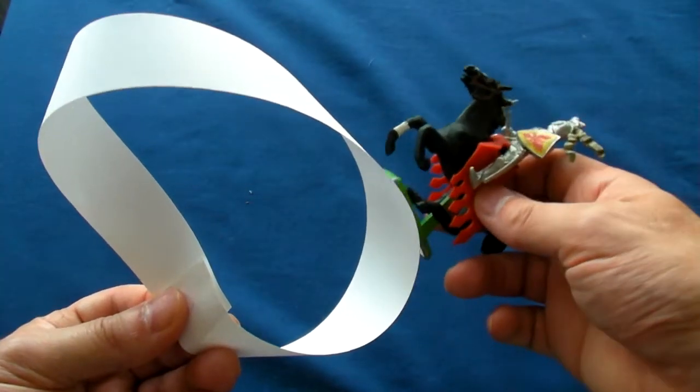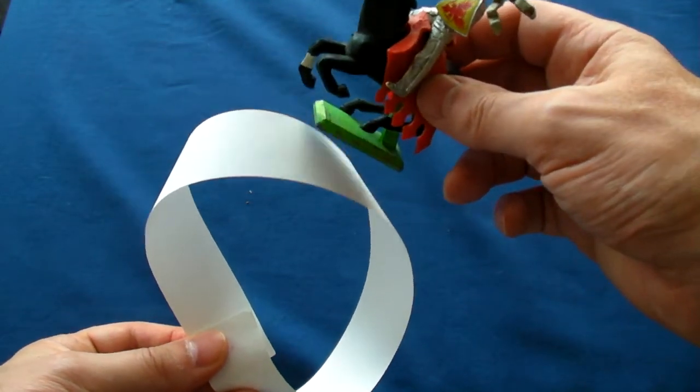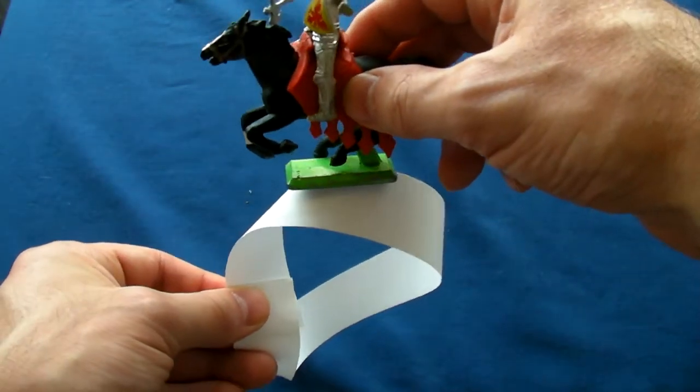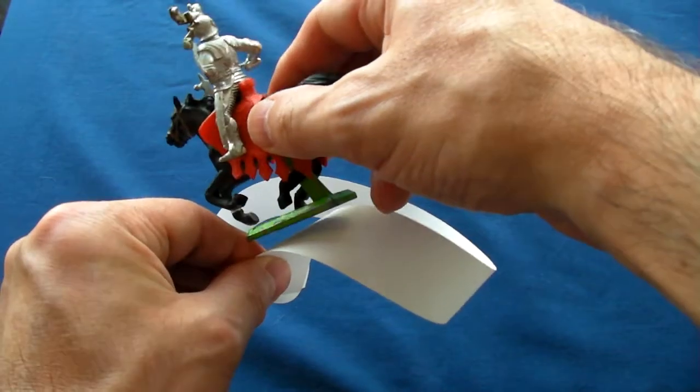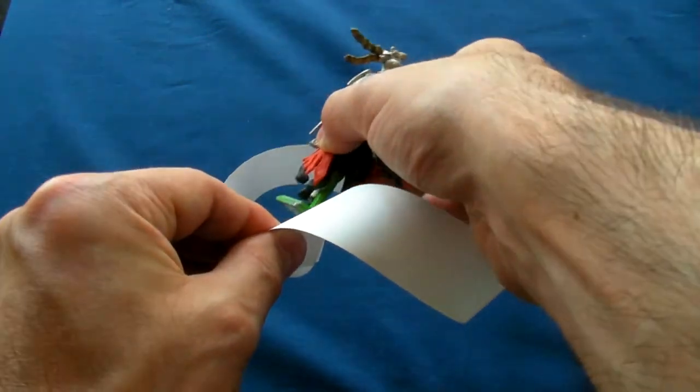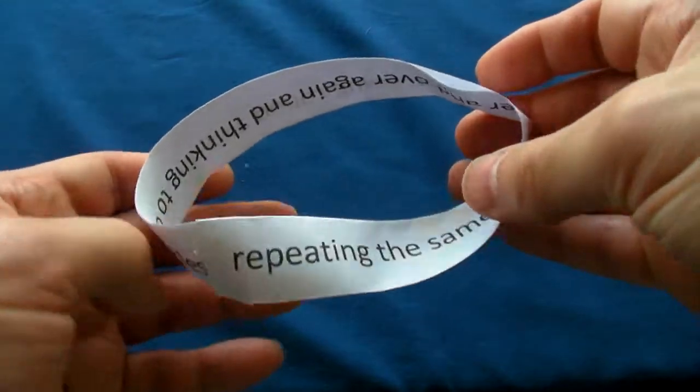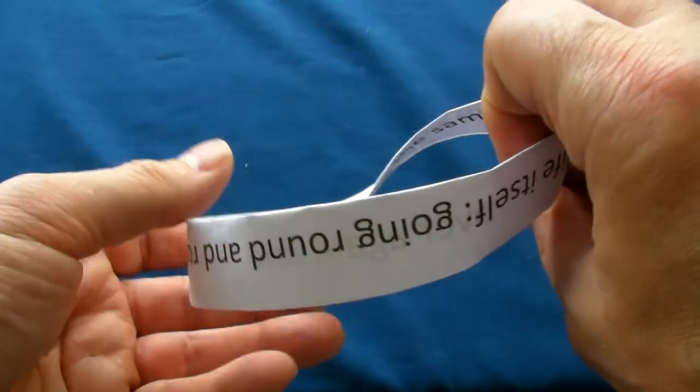So if you were a knight in shiny armor who just happened to be galloping away, you'd eventually end up where you started from and you'd have traced out the entire surface. You might have left a trail of letters behind in the form of a recursive poem.